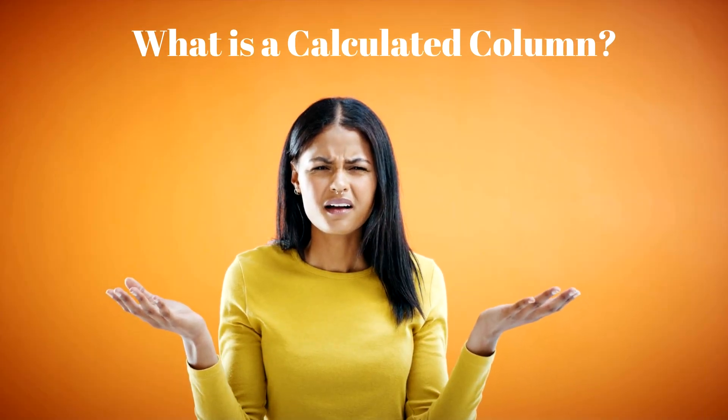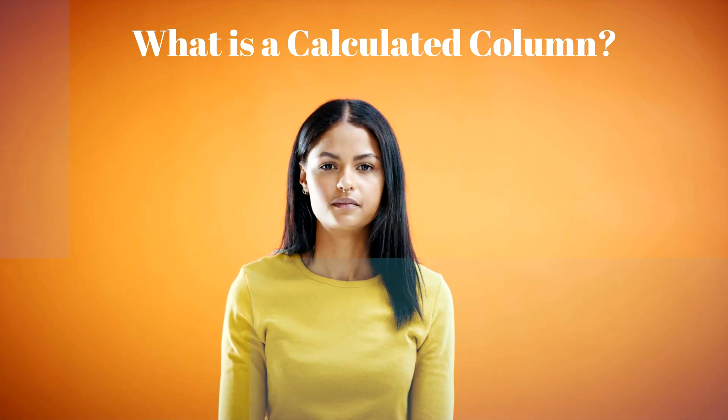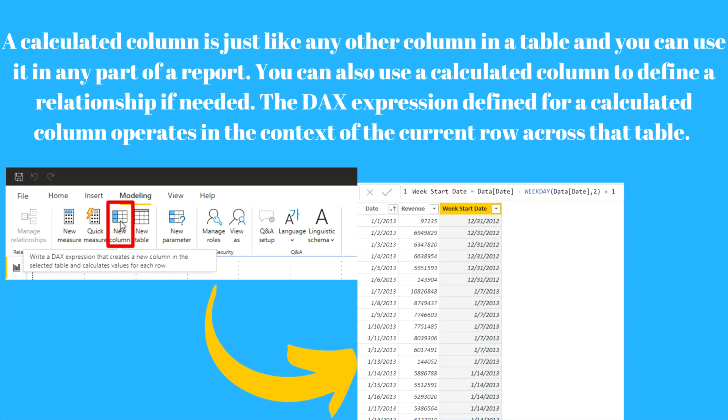The very first question comes into our mind: what is a calculated column? A calculated column is just like any other column in a table and you can use it in any part of a report. You can also use a calculated column to define a relationship if needed. The DAX expression defined for a calculated column operates in the context of the current row across that table. Any reference to a column returns the value of that column for the current row. You cannot directly access the values of other rows.